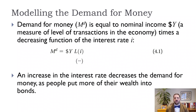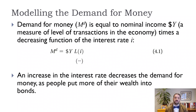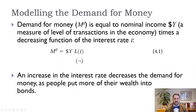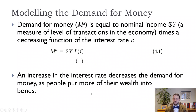Money demand (M^d) equals nominal income (dollar-sign Y) times some function of the interest rate, written as L(i) — where L stands for the liquidity function. The negative sign in formula 4.1 means that money demand falls as the interest rate rises. So a higher interest rate leads to lower money demand, and a lower interest rate leads to higher money demand. Nominal income measures the level of transactions: a $5 trillion economy has a different money demand than a $10 or $20 trillion economy.